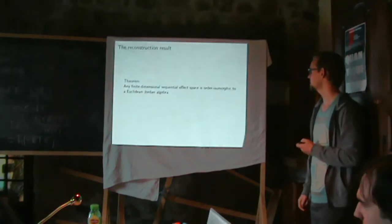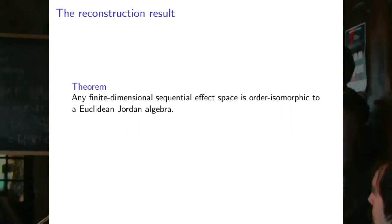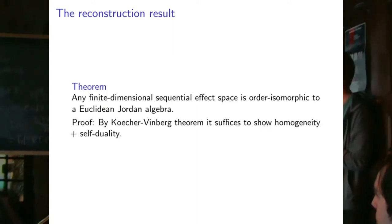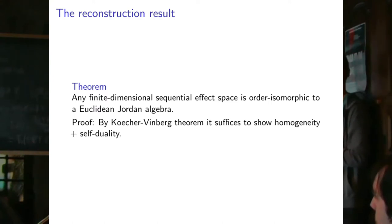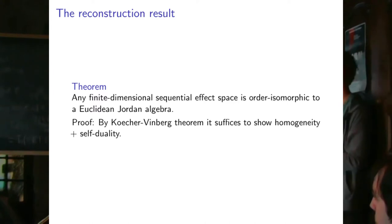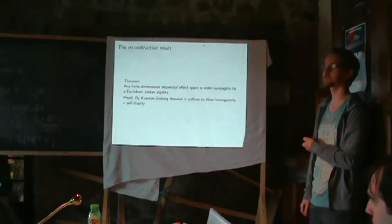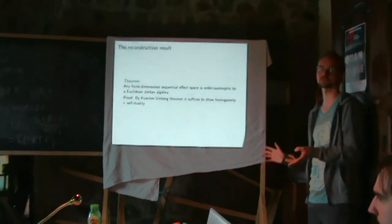I'm claiming I can reconstruct quantum theory from these properties. Specifically, any finite-dimensional sequential effect space is order-isomorphic to a Euclidean Jordan algebra. The proof uses the Koecher–Vinberg theorem, which says that if I have an order unit space that is both homogeneous and self-dual, it must be a Euclidean Jordan algebra. Conversely, any Euclidean Jordan algebra is also a sequential effect space — so this gives a new characterization of Euclidean Jordan algebras.